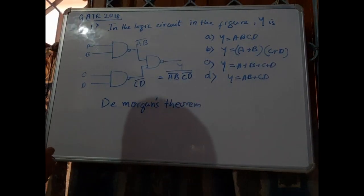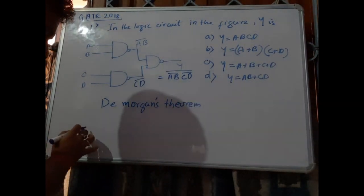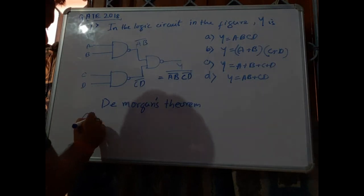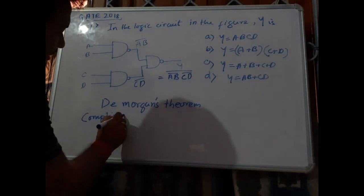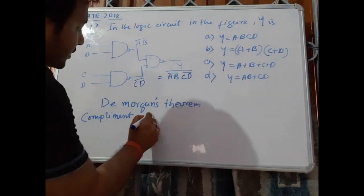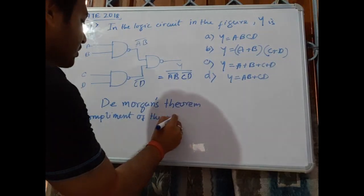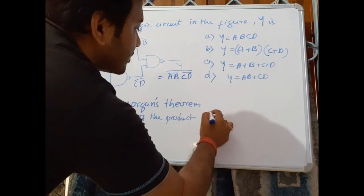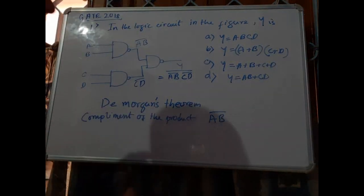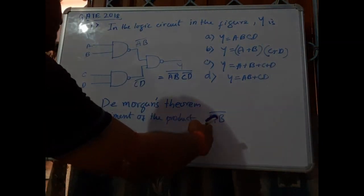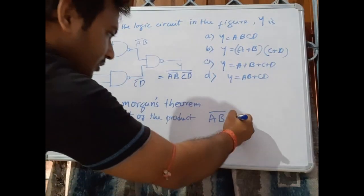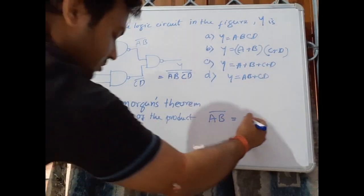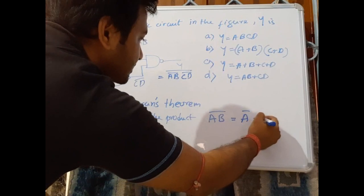What is given by De Morgan's theorem? One is complement of the product. Complement of the product is given: say the input is a b, and this is the product a b, and the complement a b bar equals a bar plus b bar.